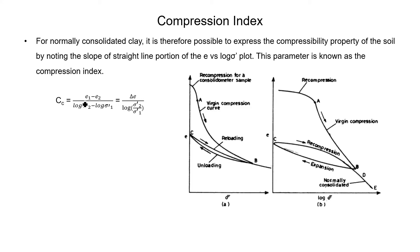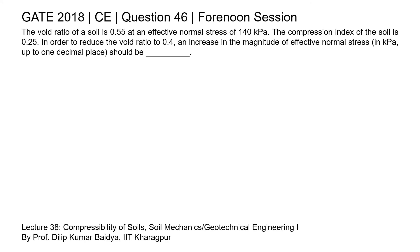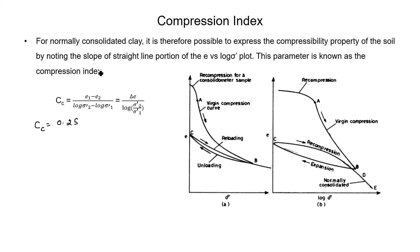CC is equal to (e1 minus e2) divided by (log σ2' minus log σ1'). Here the value of CC is given as 0.25, and this is substituted into the equation as the compression index.